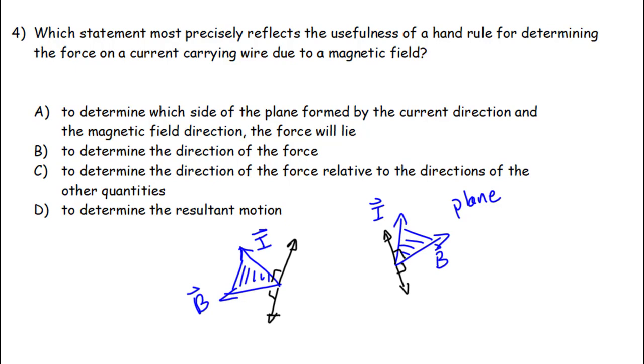Now, of course, with your hands, you can only curl your fingers in one direction. You can only curl them towards the palm. So if I choose my right hand, and I start with my fingers in the direction of I, then I have to curl them towards B. So we always start at I, and we curl towards B.